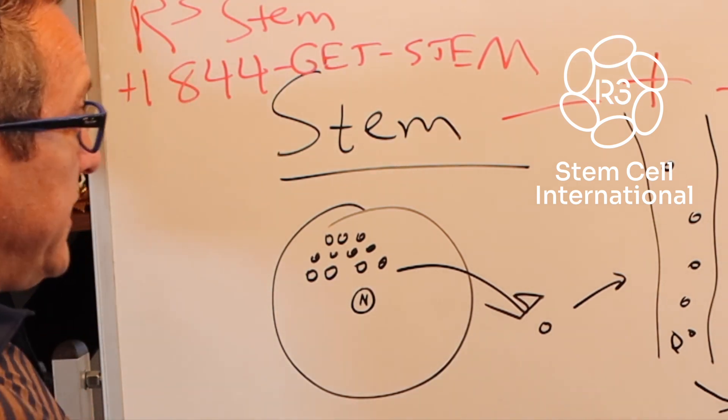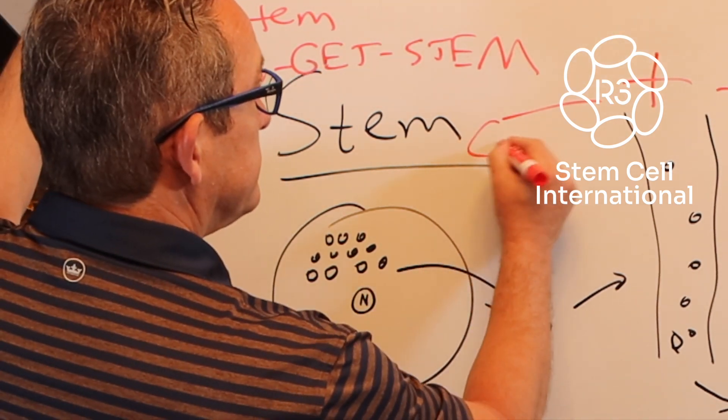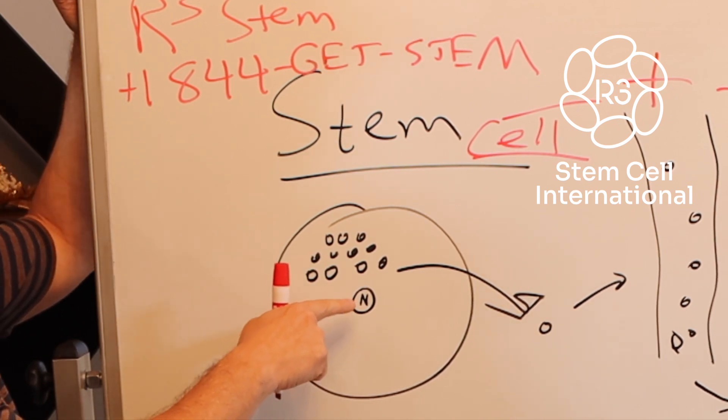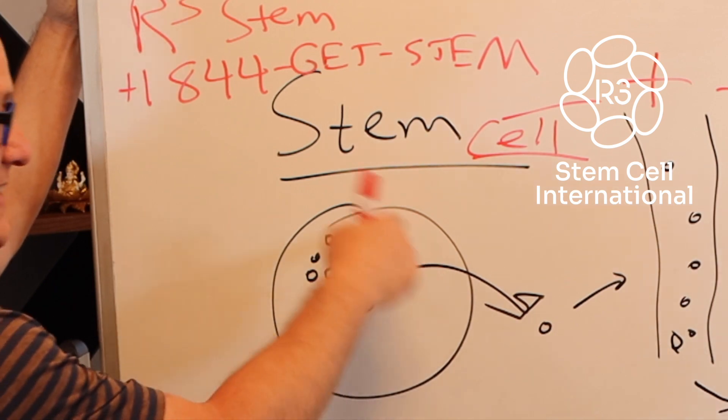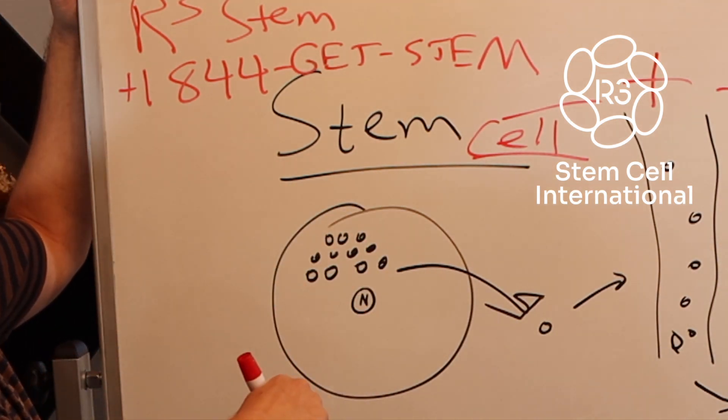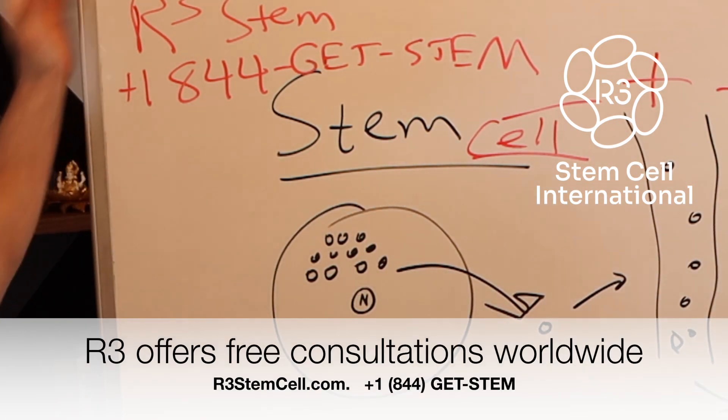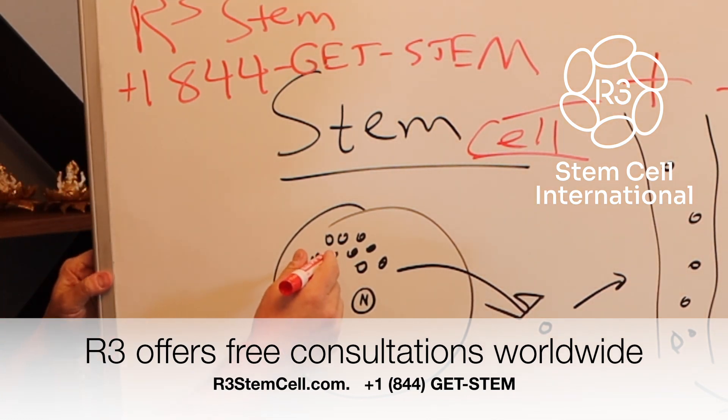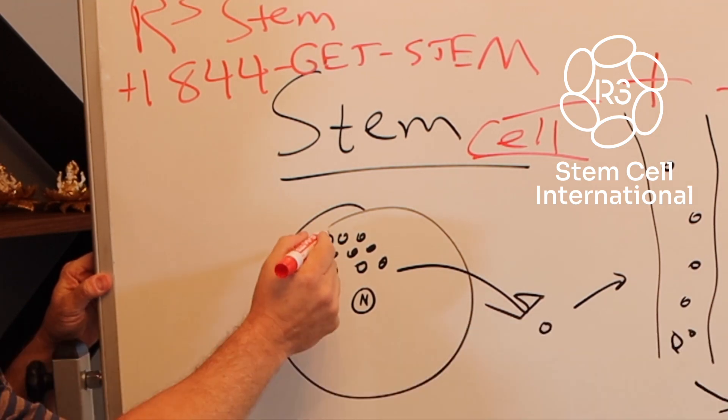A stem cell is a cell. It has a nucleus. I put an N here to denote a nucleus. It has a lot of intracellular components. And one of the things that it can make, all cells make them, are exosomes. They're like little soap bubbles inside the cell.